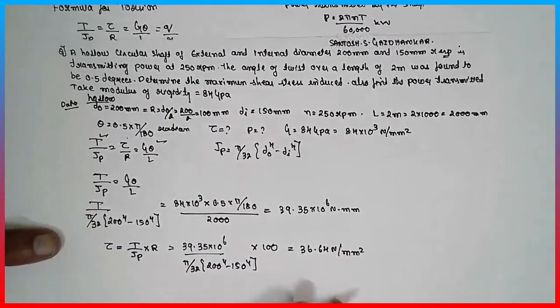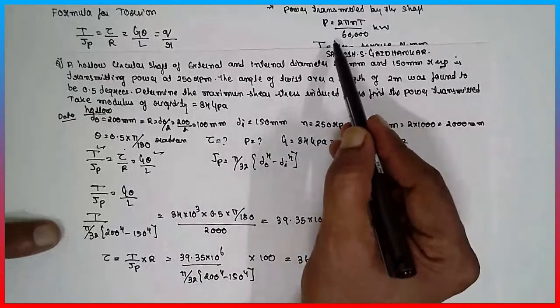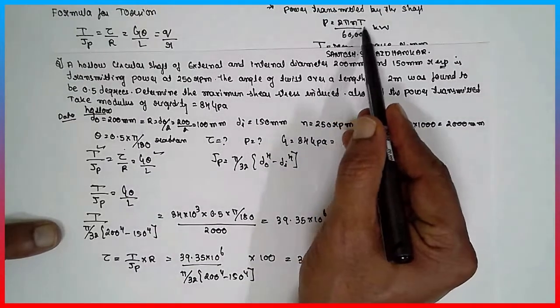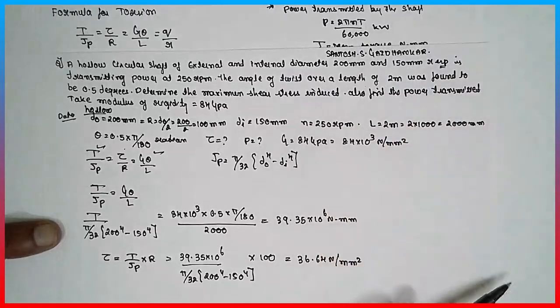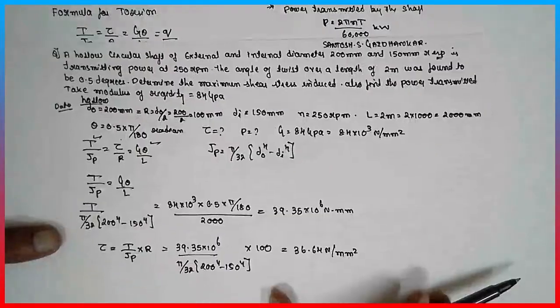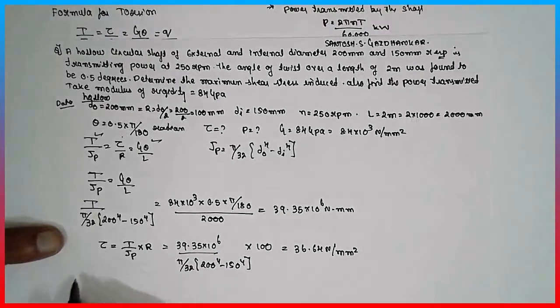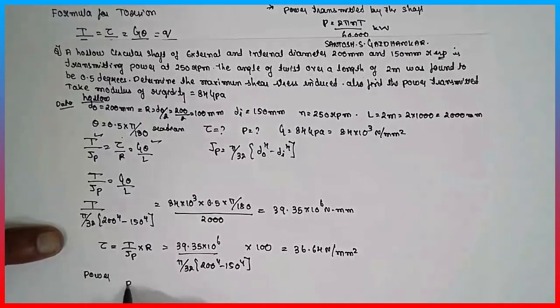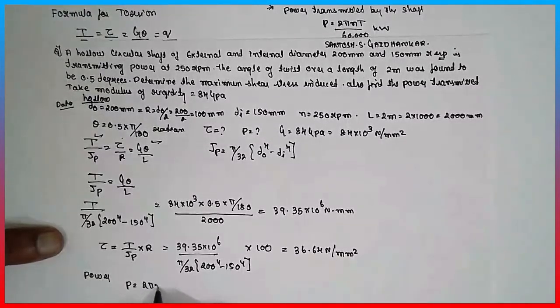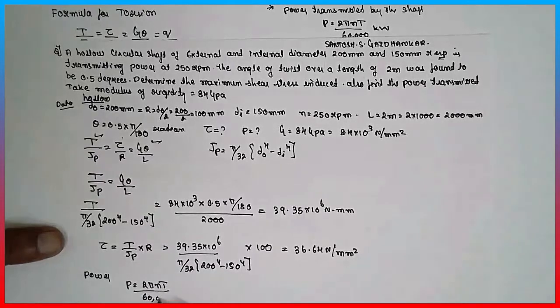Stress unit is Newton per mm square. Now we have to find out the power. This is the formula of power. P is equal to 2 pi n T divided by 60,000 has to be expressed in terms of kilowatt. Power, formula is P is equal to 2 pi n T divided by 60,000.